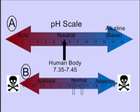The human body's pH is 7.35 to 7.45. If you look at illustration B, the arrows show the normal range of 7.35 to 7.45, and the arrows on the ends of the line represent the tolerances on either side.